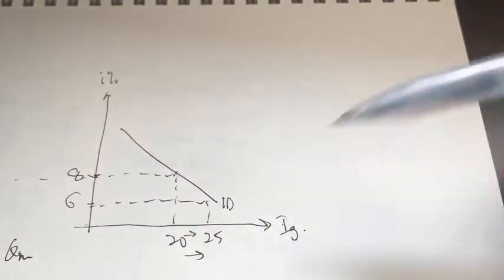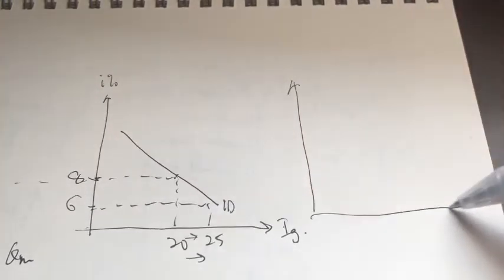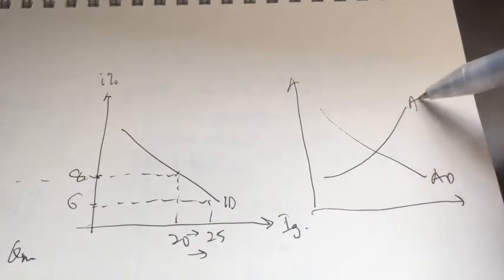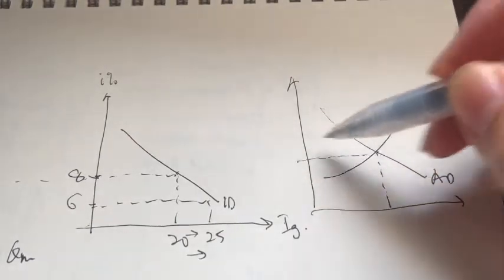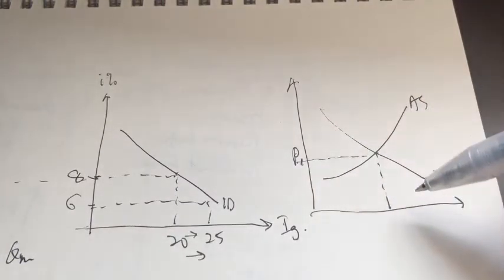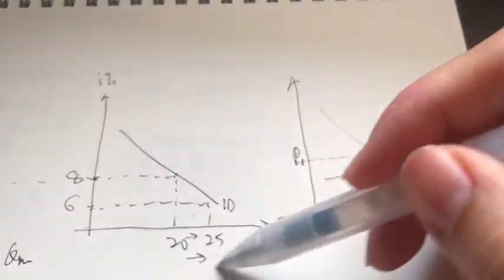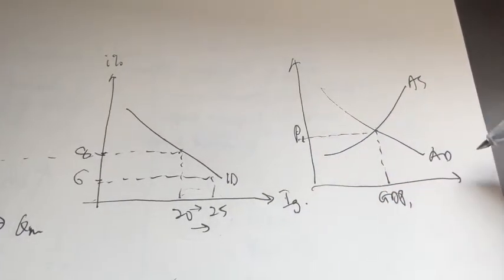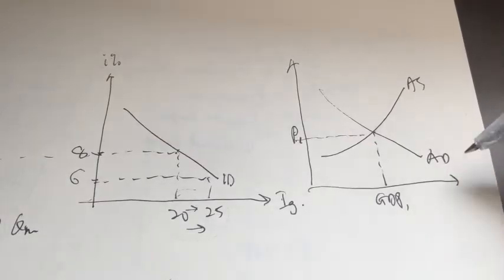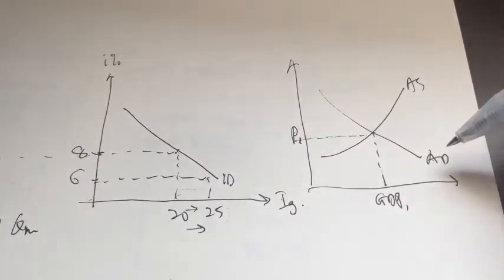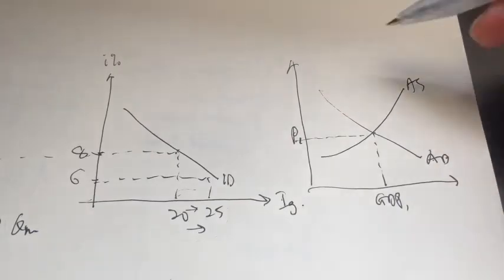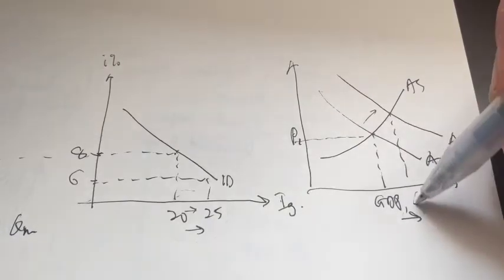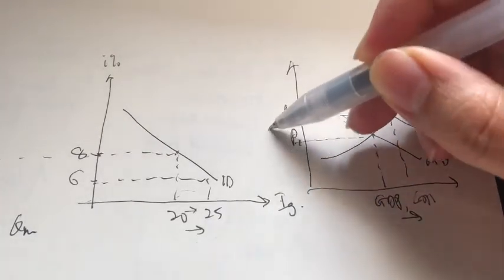How will this increase in IG affect aggregate demand? Here we sketch the aggregate demand and aggregate supply curves. This is the initial equilibrium at P1 and GDP1. Now we have an increase in investment. Remember, IG is a component of aggregate demand — the four components being C, IG, G, and net exports. So if IG increases, AD will increase, meaning the AD curve shifts to the right. We'll have a new AD curve with a new, higher GDP as well as a higher price level.